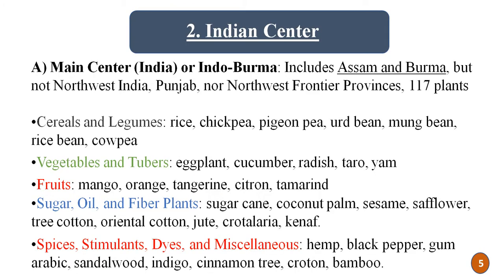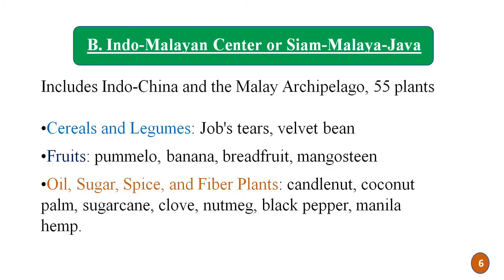The second is the Indian center, which has two sub-centres. The first is the main center or Indo-Burma region, which includes Assam and Burma but not northwest India, Punjab, or the northwest frontier province — this sub-centre contains 117 plants. The second sub-centre is the Indo-Malayan or Sunda-Malaya-Java center, which includes Indo-China and the Malayan archipelago and contains 55 plants.